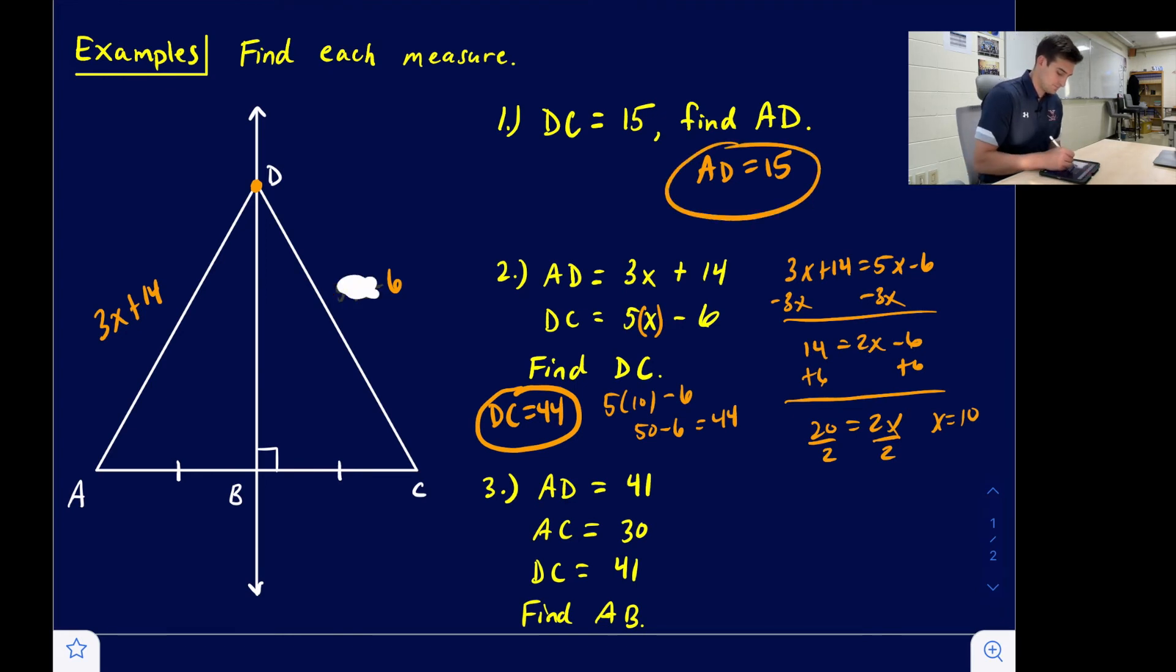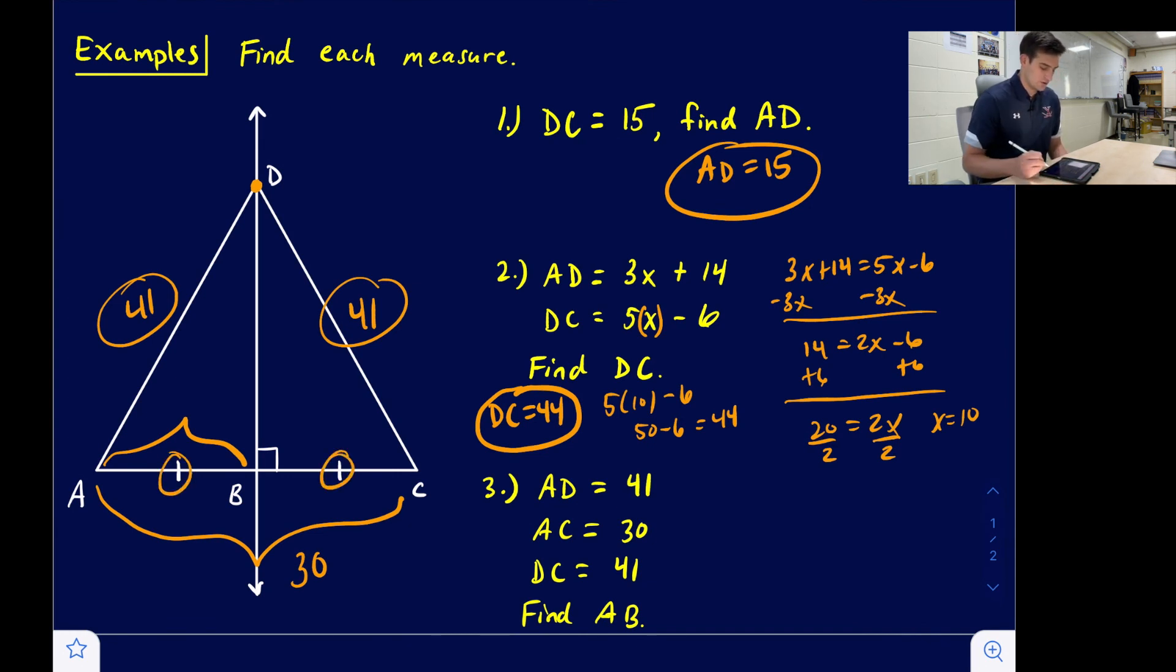And the last question we're going to look at says AD equals 41, AC equals 30, and DC equals 41. They want us to find AB, which is just this segment right here. So really we don't even need these lengths - kind of irrelevant information - because if we understand the definition of a perpendicular bisector, then we know that these two segments are congruent to each other. So if the entire measure there is 30, then we know that AB is going to be half of that, which will be 15. And that is the perpendicular bisector theorem.